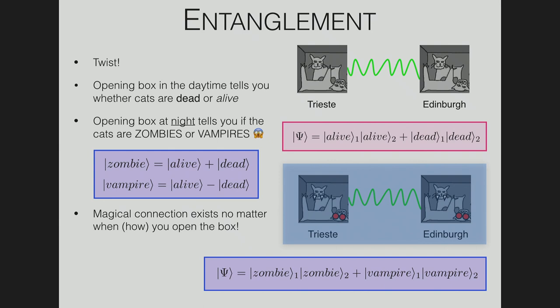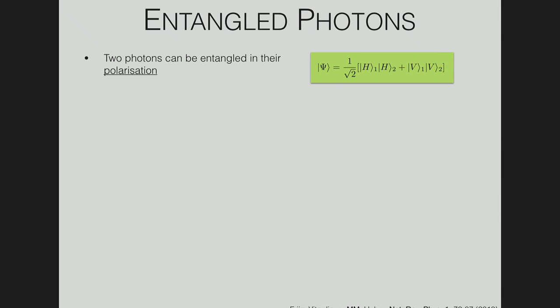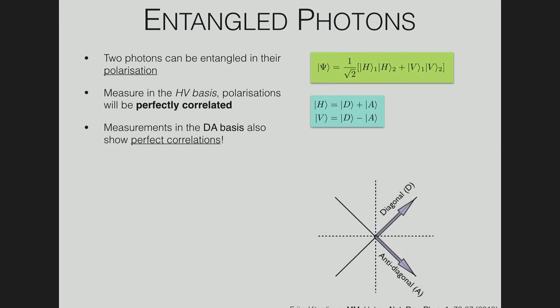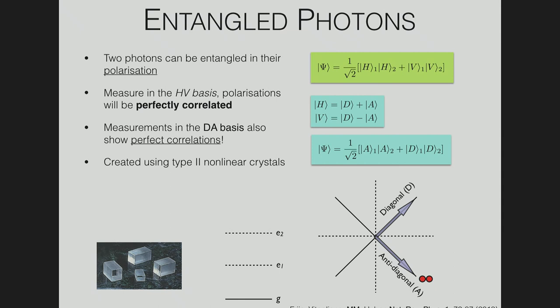If you take a polarization entangled state such as HH plus VV and you measure it in the HV basis, you get perfect correlations. If you rotate to the DA basis—that's my zombie vampire—if you plug these equations into the first one, you'll find the state looks perfectly the same. As Benny pointed out, we produce these types of states through spontaneous parametric downconversion. To produce entanglement, you need to play some more tricks besides just SPDC, at least in polarization. You need to produce two indistinguishable polarization pairs.